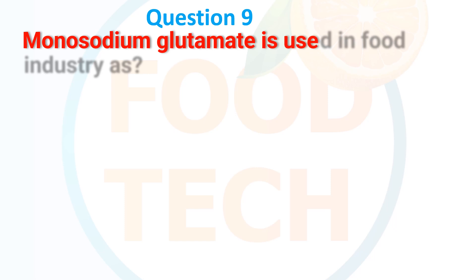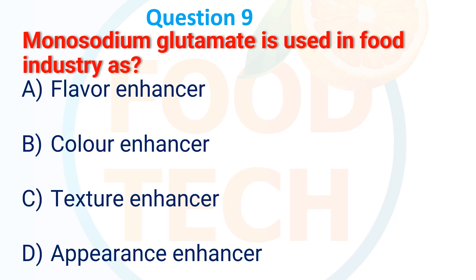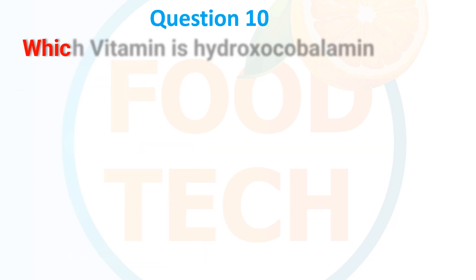Question 9: Monosodium glutamate is used in the food industry as — A. Flavor enhancer, B. Color enhancer, C. Texture enhancer, D. Appearance enhancer. The answer is A. Flavor enhancer.